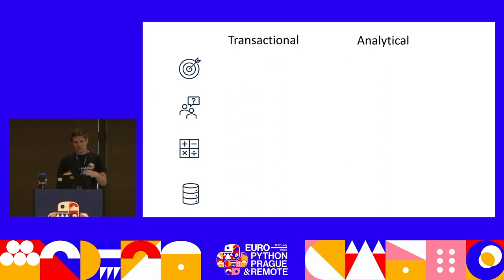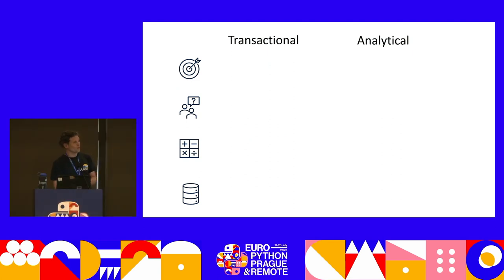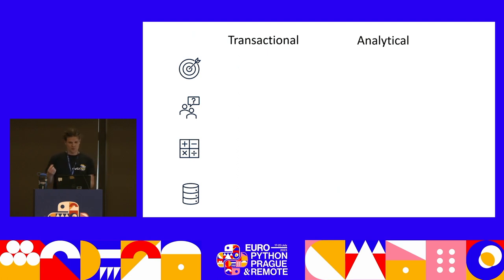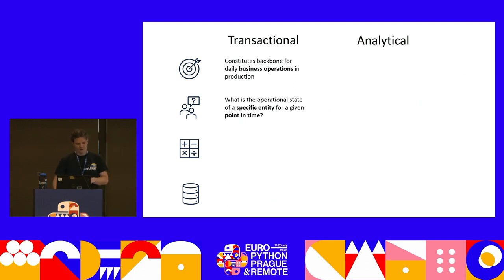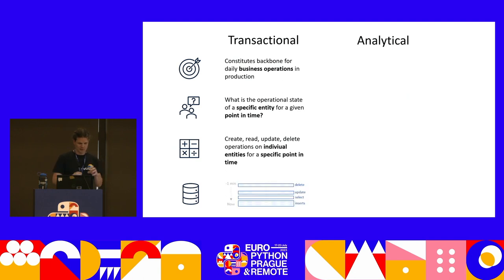Imagine we have a webshop with different real-world entities such as customers, orders, and shipments. We want to capture those entities in data in a very consistent and valid way. Transactional databases provide the means to do so — concepts such as primary keys, foreign keys, non-null constraints, non-duplicated constraints, and ACID compliance: atomicity, consistency, isolation, durability. These really constitute the backbone of daily business operations, focused on specific entities at a specific point in time, associated with CRUD operations — creating, querying, updating, and deleting individual rows.